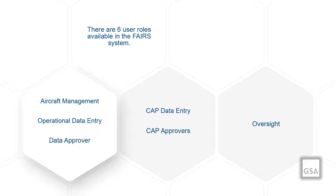There are six user roles available in the FAIRS system. User roles are in essence permissions to access certain features and functions which will allow you to fulfill your expected reporting responsibilities. The first is Aircraft Management, responsible for managing assets—both Federal Aircraft and CAS agreements. The second is Operational Data Entry, responsible for entering the operational data for the current quarter and the previous quarter. The third is Data Approver, responsible for approving assets including new assets, transfers, and disposals.